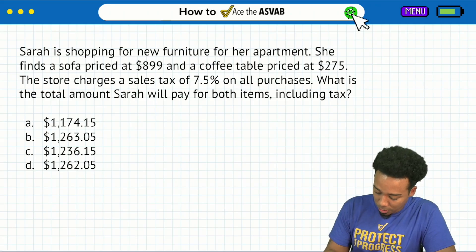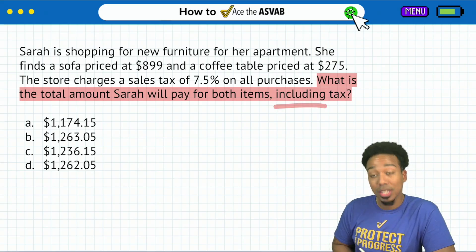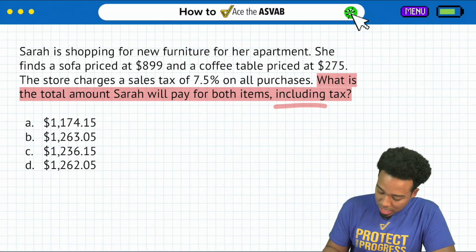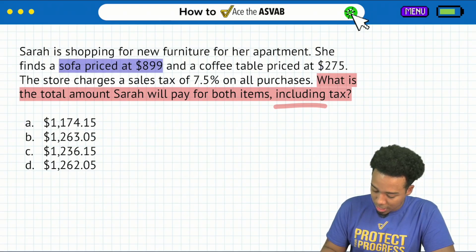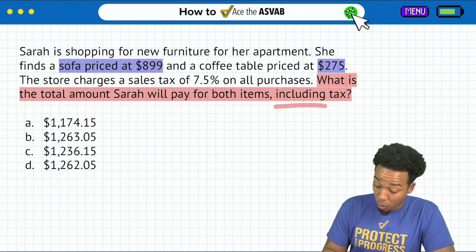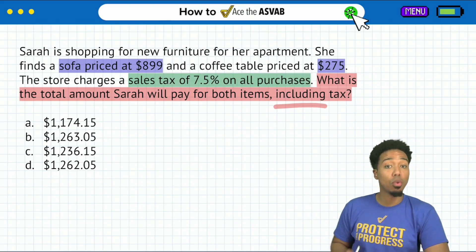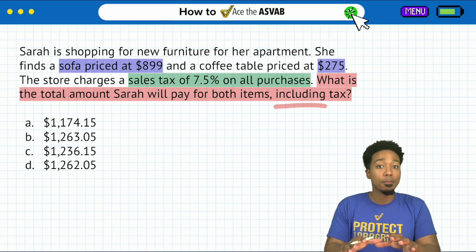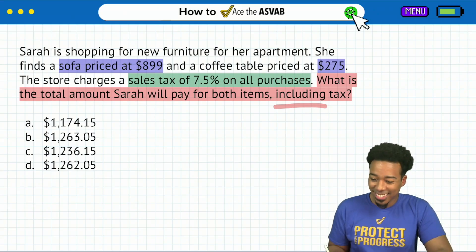Here is number two — same deal, go to the question: what is the total amount Sarah will pay, including the tax? Sarah is shopping for furniture. She found a sofa at $899 and a coffee table at $275, and we're going to be paying a sales tax of 7.5% across the board. Let's find that total — first we'll find the total before tax, then figure out the tax amount, add them together, and we're done.